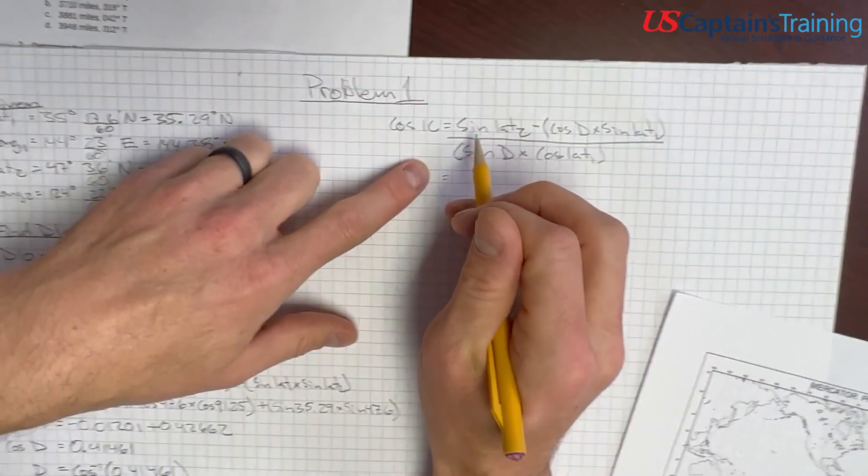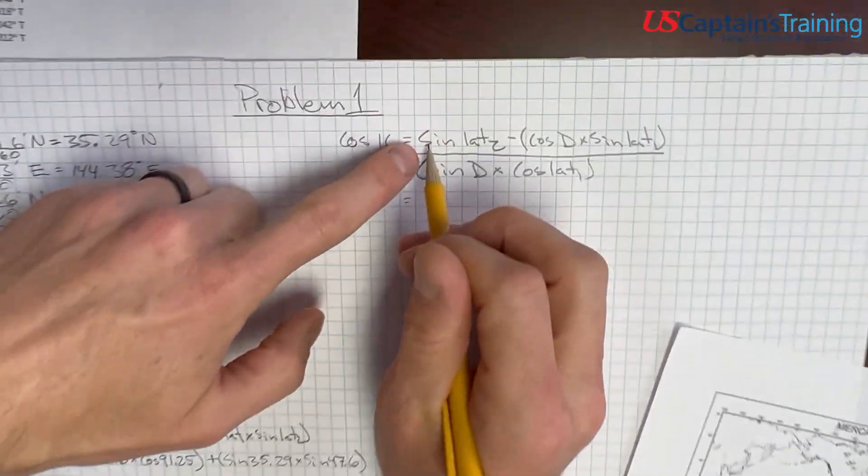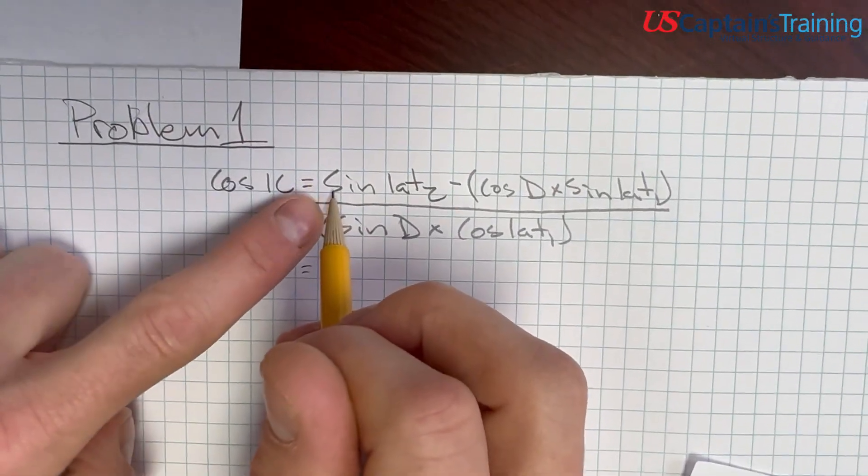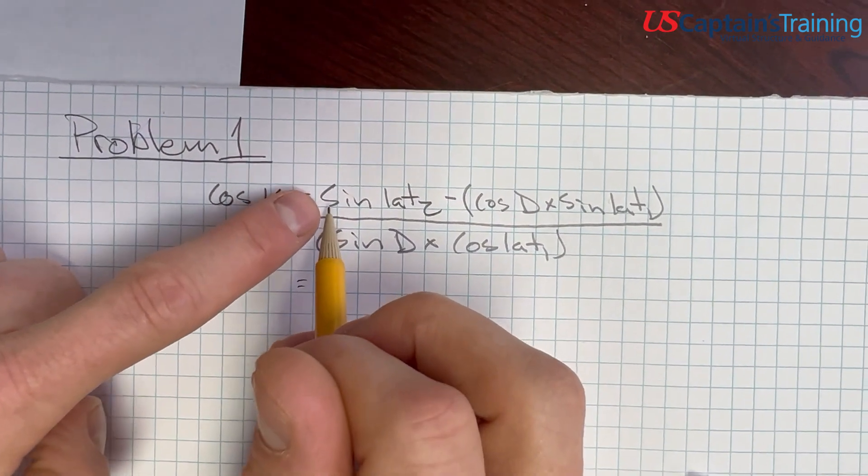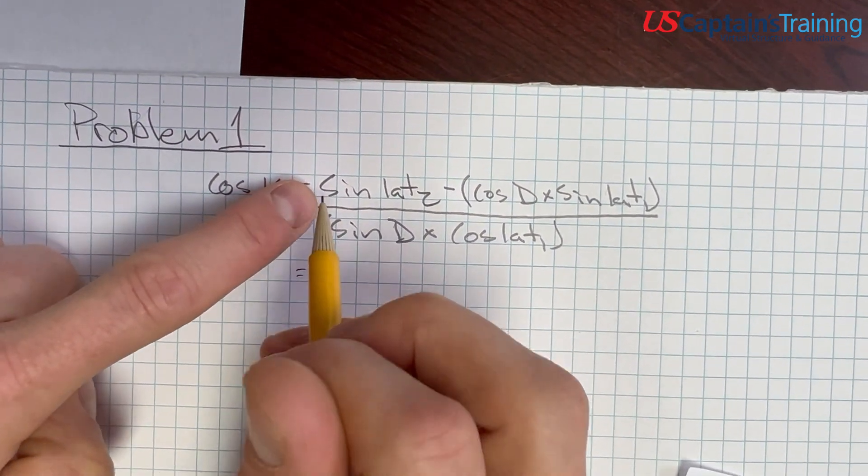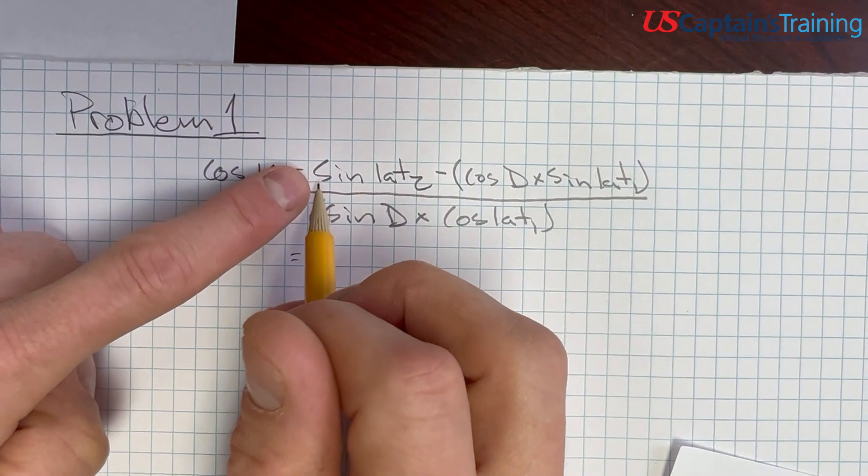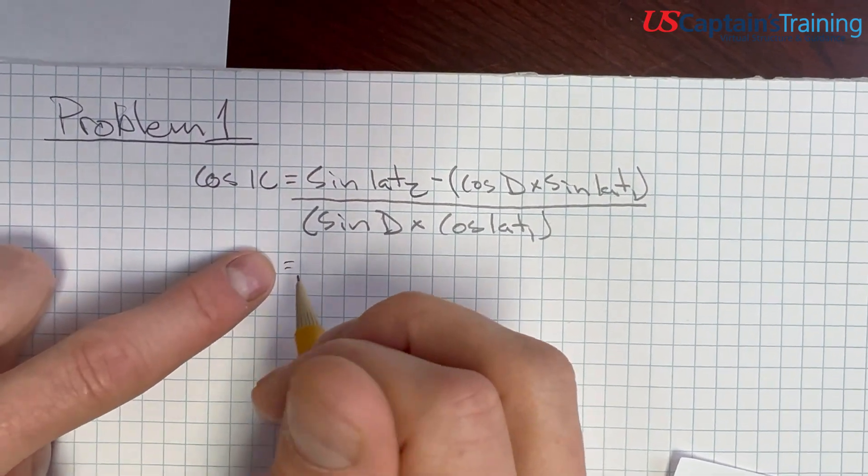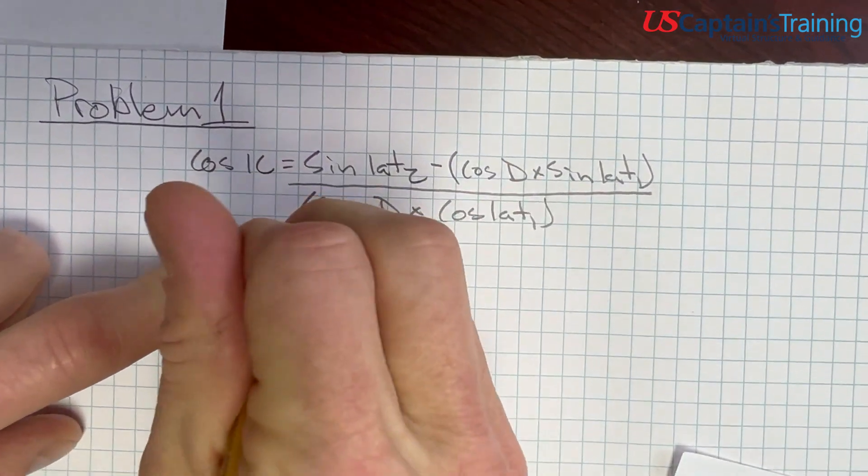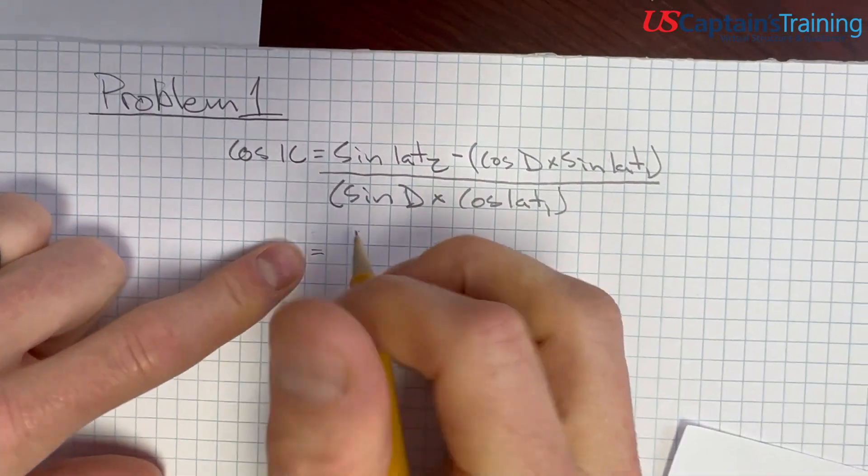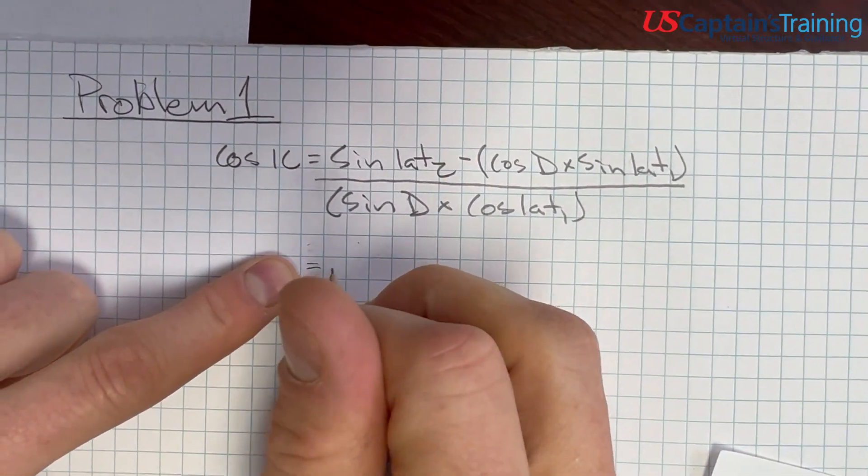All this is divided by sine distance times cosine lat 1. And, now we need to plug these numbers and plug and chug. So, sine lat 1. This is interesting here. If you cross the equator, then this is negative. But, we did not cross the equator, so it's positive. That was one of the things that took me a while to keep straight.